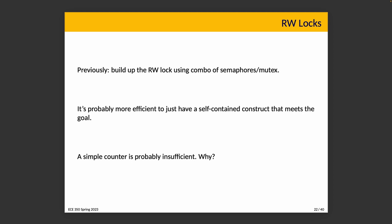The readers-writers lock allows multiple read threads to execute concurrently, but only one writer, and when the writer is in the critical section, no readers. We built up the concept using basic semaphore and mutex constructs in the previous course, but it's probably more efficient to have a self-contained construct. The problem we face is that a simple counter is probably insufficient — if the counter is currently one, does that represent one reader thread or one writer thread?